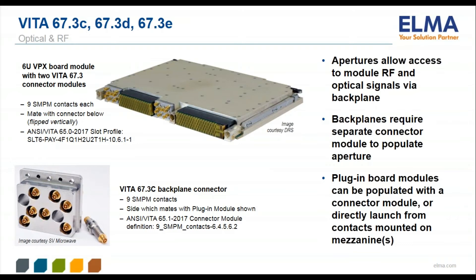The purpose of these apertures is to support blind mate RF or fiber ribbons that pass signals through the backplane. This allows rigid, semi-rigid, and flexible coaxial cables to be installed behind the backplane rather than draped across the front of plug-in modules as was done in the past. This improves system reliability and allows more precise control of these RF signals.